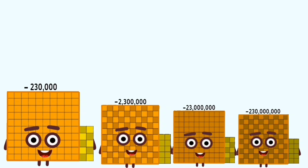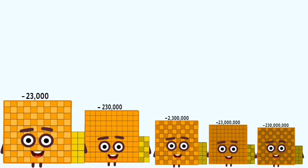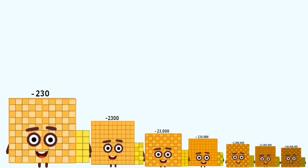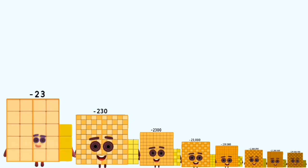Achoo! Negative twenty-three thousand. Achoo! Negative two thousand three hundred. Achoo! Negative two hundred thirty. Achoo! Negative twenty-three.